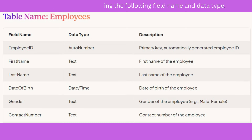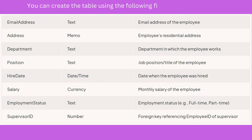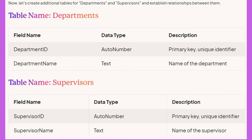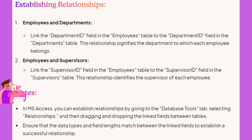Establishing relationships between Employees and Departments: link the Department ID field in the employees table to the Department ID field in the departments table. This relationship signifies the department to which each employee belongs. For Employees and Supervisors: link the Supervisor ID field in the employees table to the Supervisor ID field in the supervisors table. In MS Access, establish relationships by going to the Database Tools tab, selecting Relationships, and dragging and dropping the linked fields between tables. Ensure data types and field lengths match between linked fields.